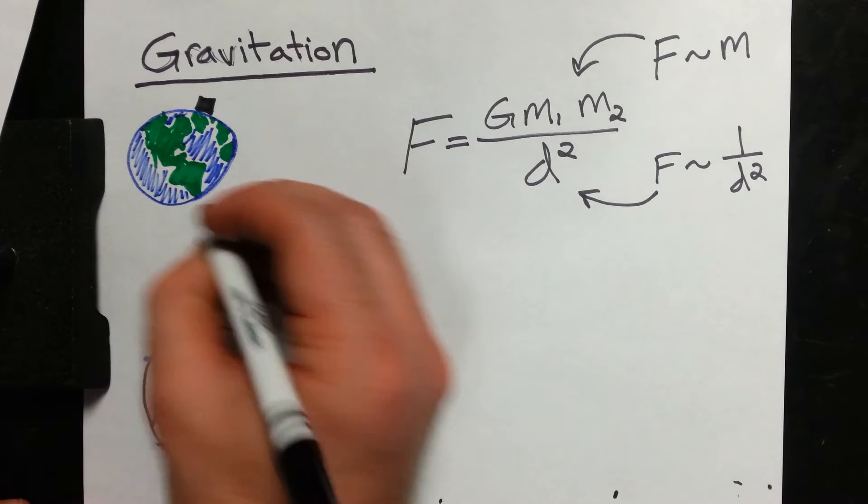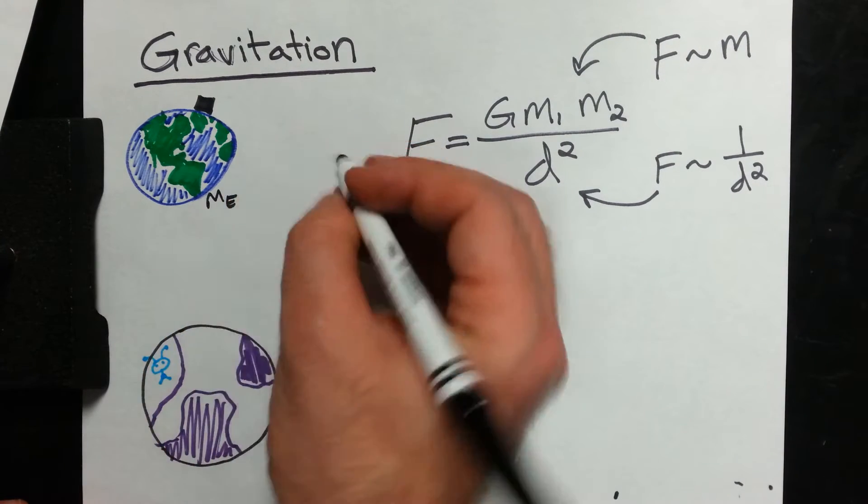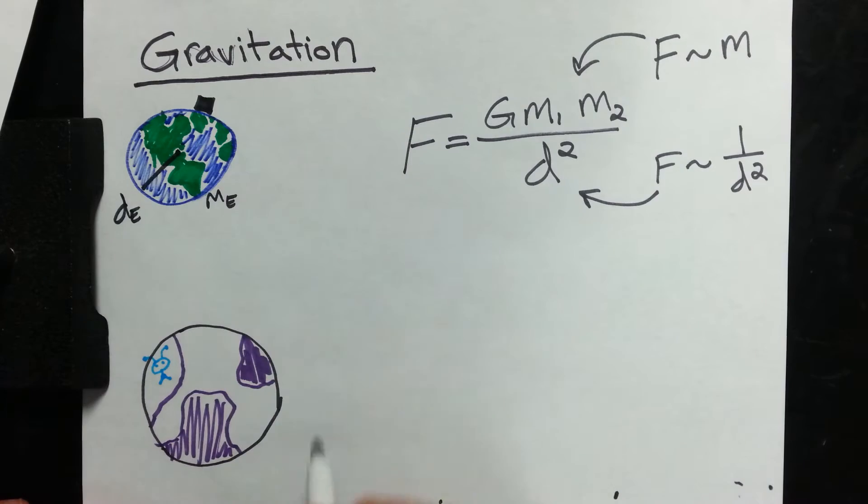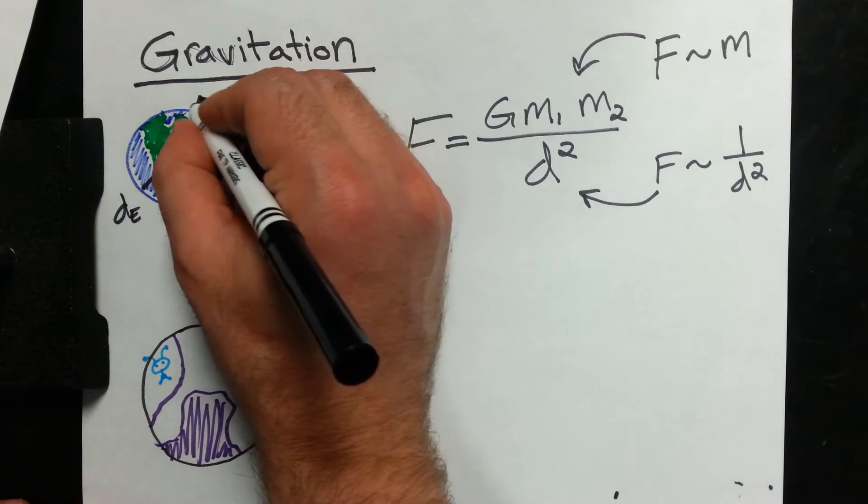Alright, so let's say we have Earth, a certain mass of the Earth, and it itself has a distance to the center. We'll call that DE, center of the Earth. And I have a probe, I have a satellite here, right?